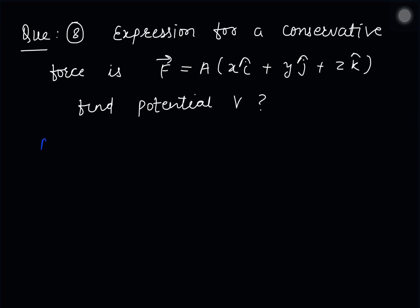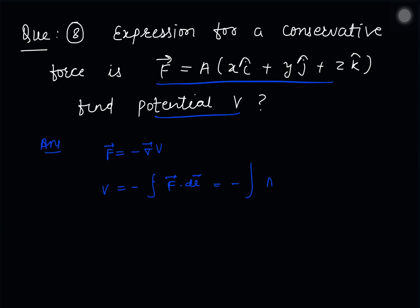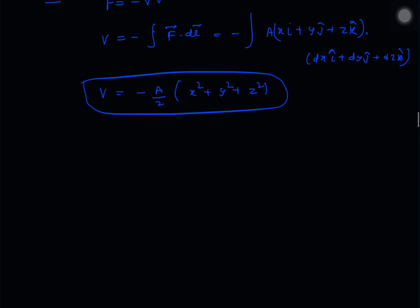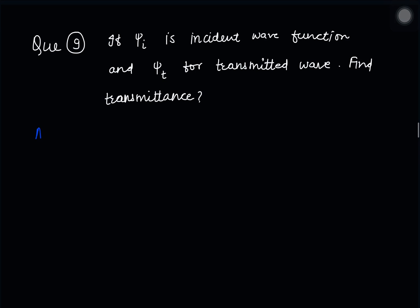The next question gives a conservative force field. The corresponding potential is found using F = −∇V. So V = −∫F⃗·dl⃗ = −∫(ax î + ay ĵ + az k̂)·(dx î + dy ĵ + dz k̂), which gives V = −(a/2)(x² + y² + z²). This value equals zero at the origin.